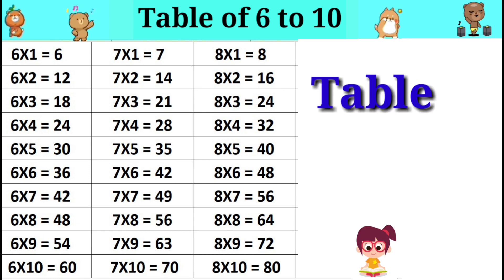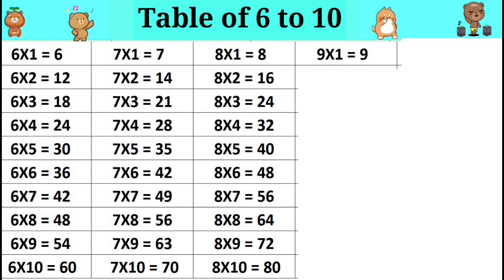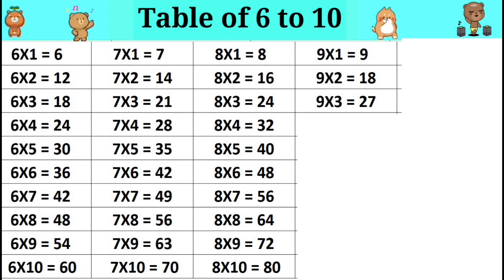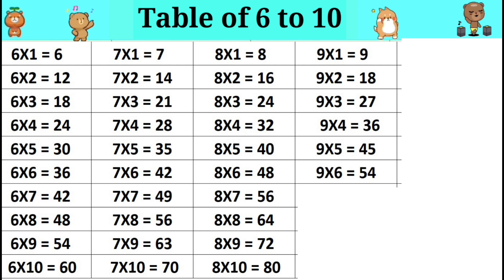Table of 9. Nine ones are 9. Nine twos are 18. Nine threes are 27. Nine fours are 36. Nine fives are 45. Nine sixes are 54.